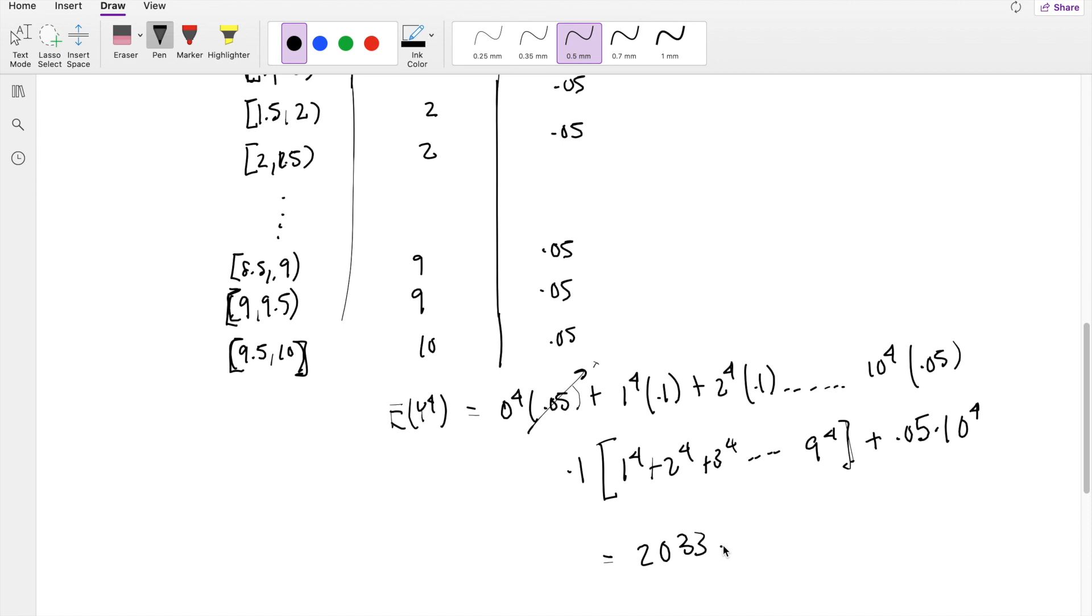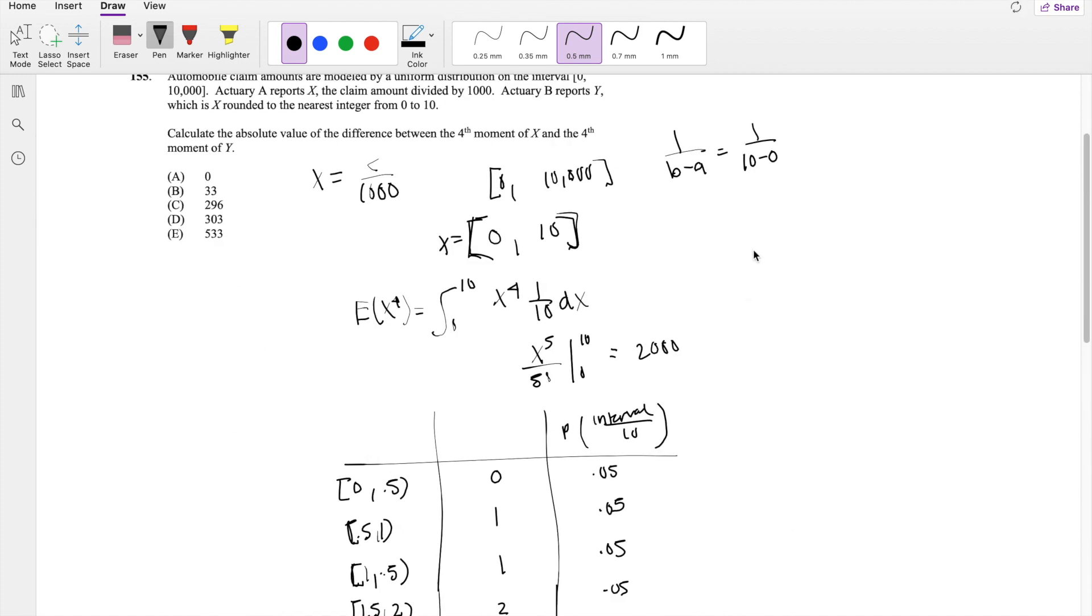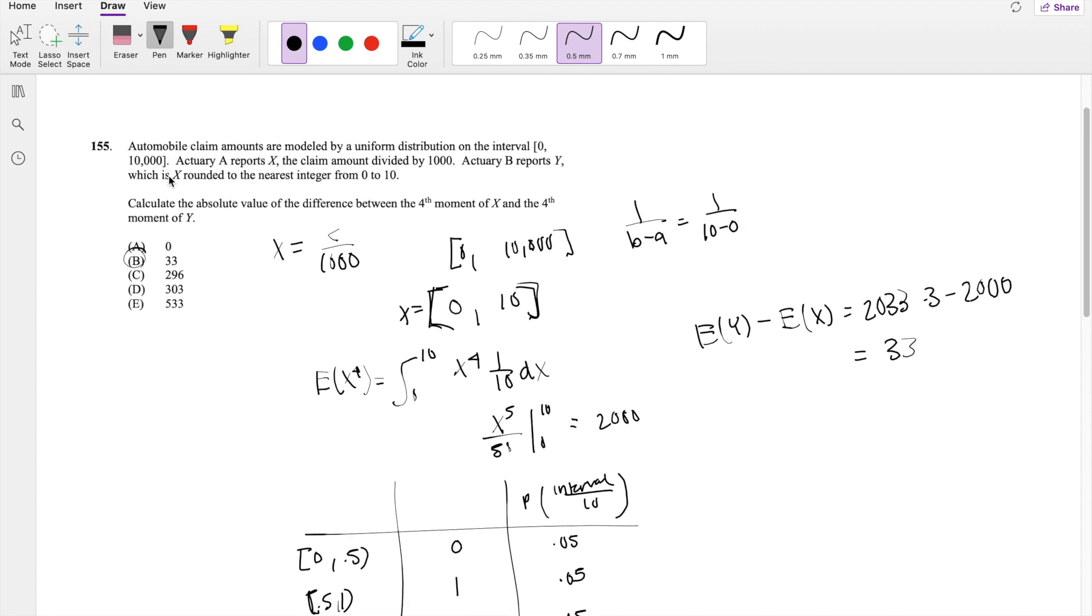The difference between the expectation of Y^4 and X^4 is 2,033.3 minus 2,000, which equals 33. That's answer B. If you have any questions, leave them below. Otherwise, make sure you like, subscribe, and share. Bye!